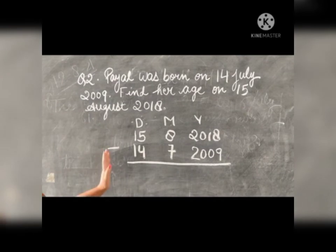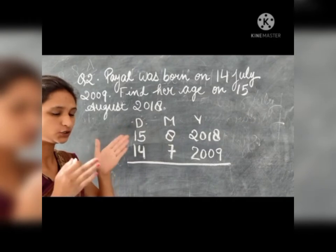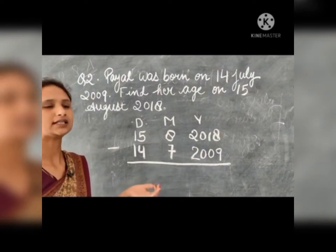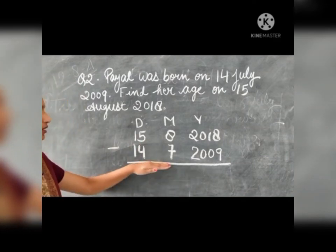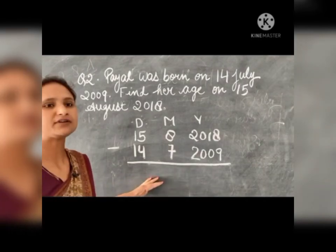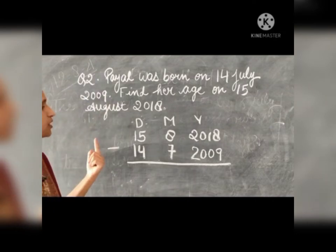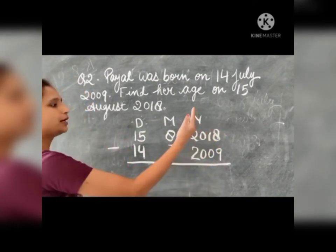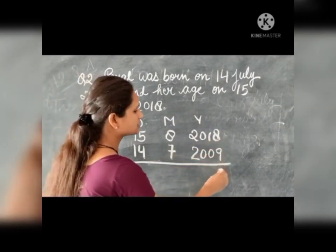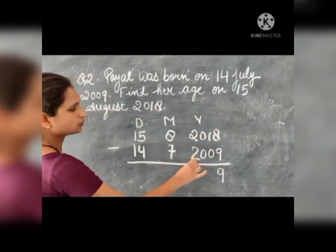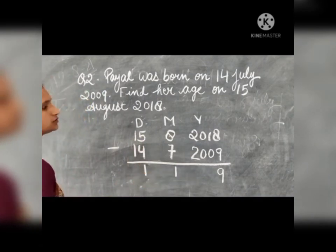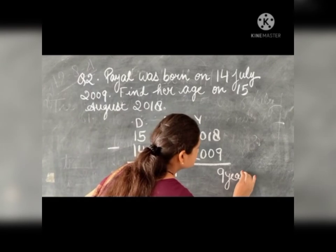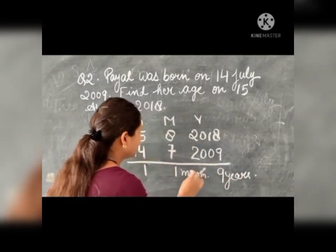You have to write today's date above and your birth date below to find your own age. Today is 17/8/2021. Here we are finding the age of Payal. Keep in mind that the bigger number always comes on top and you subtract the smaller from the bigger. So: 2018 minus 2009 = 9, 08 minus 07 = 1, 15 minus 14 = 1. Her age is 9 years, 1 month and 1 day.